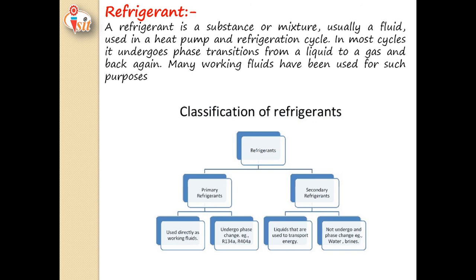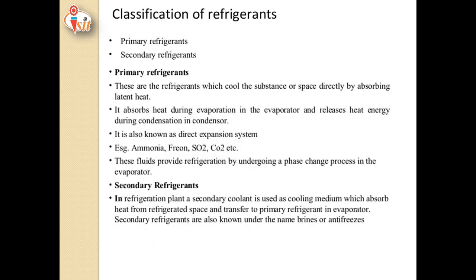Primary refrigerants are those which cool a substance or space directly by absorbing latent heat. They absorb heat during evaporation in the evaporator and release heat energy during condensation in the condenser. In the vapor compression refrigeration system, vapors of refrigerant are compressed in the compressor, forming high-pressure, high-temperature vapors. These are sent to the condenser where phase transformation takes place, converting them into high-pressure, low-temperature liquid refrigerant.